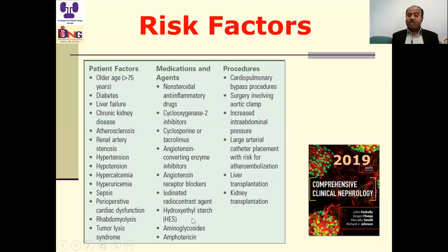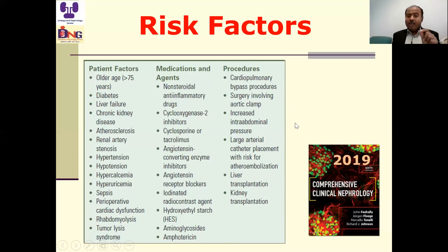Radiocontrast agents may lead to acute kidney injury. Aminoglycosides and amphotericin B are also nephrotoxic. Procedural risk factors include: cardiopulmonary bypass, surgery involving aortic clamping, increased intra-abdominal pressure, large arterial catheter placement with risk of atheroembolism, liver transplantation, and kidney transplantation. All are associated with increased risk of AKI. We should apply this checklist whenever we see a patient.